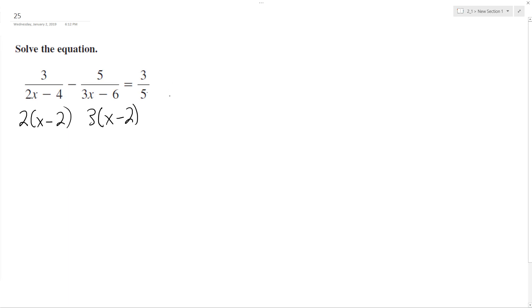So I need a common denominator here. It looks like I'm going to have to deal with 2 times 3 times 5. So it looks like it's going to be 30 quantity x minus 2.